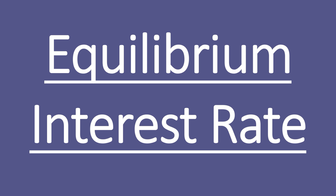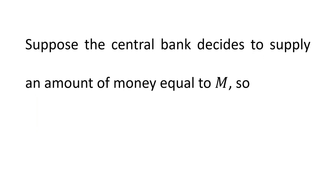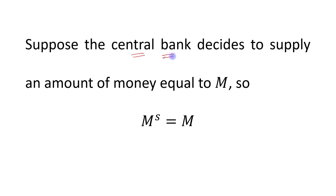Hello students, today's topic is equilibrium interest rate. Let's start. Suppose the central bank decides to supply an amount of money equal to M, so that we can write money supply equals to M. The money supply is determined by the central bank, and it is given as M.